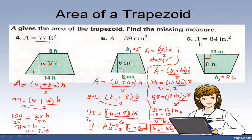Let's check: add the bases 13 and 8 to get 21, multiply by the height of 8, divided by 2. 8 divided by 2 is 4, and 4 times 21 gives you 84. It checks out. I hope you got all of these correct. Go ahead and practice more in your book — you have a lot of exercises on these. My next video is going to be on the area of regular polygons. I'll see you in the next video.